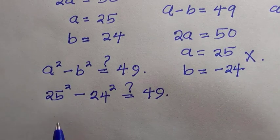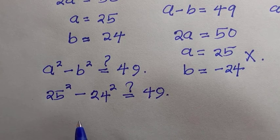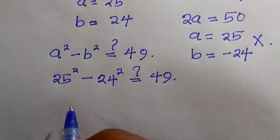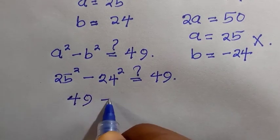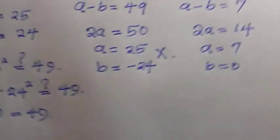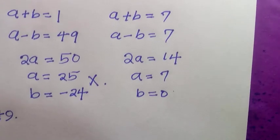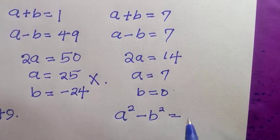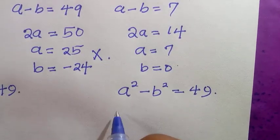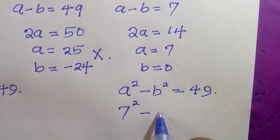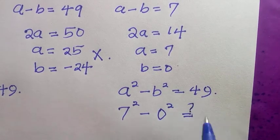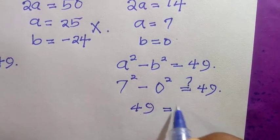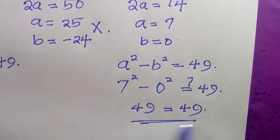25 squared minus 24 squared gives us 49, so 49 equals 49 — which confirms a equals 25 and b equals 24. For a equals 7 and b equals 0: 7 squared minus 0 squared equals 49, and the left-hand side equals the right-hand side as 49 equals 49. Both solutions are verified.